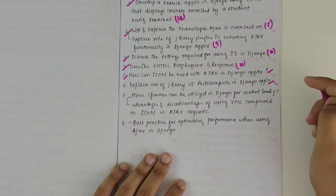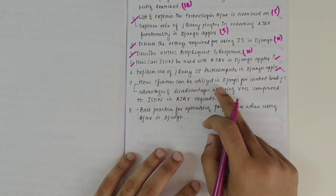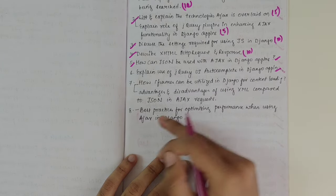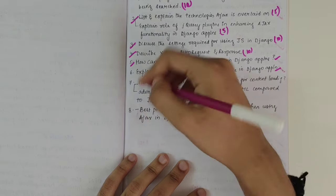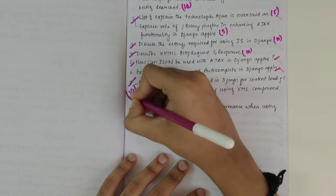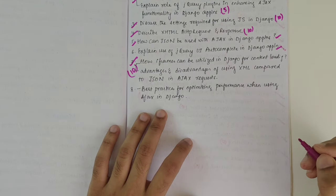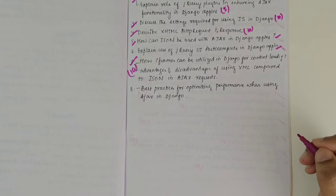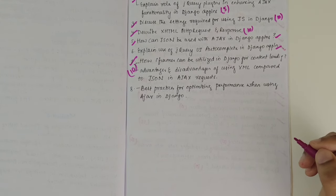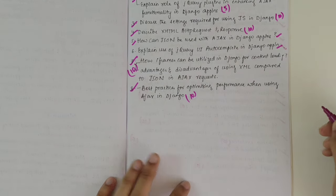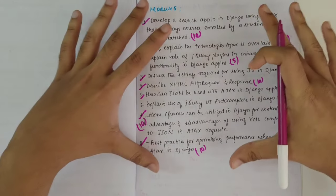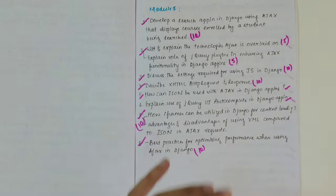How can iframes be utilized in Django for content loading? And along with that, advantages and disadvantages of using XML compared to JSON. These two things can sum up to 10 marks. Then we have, what are the best practices for optimizing the performance while using Ajax in Django? So this is again one of the important questions. So make sure that you cover these eight questions. You'll be thorough with the fifth module.